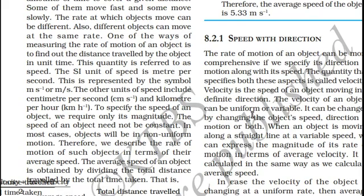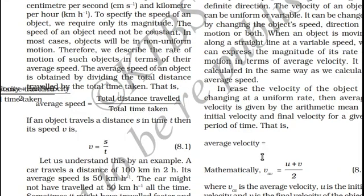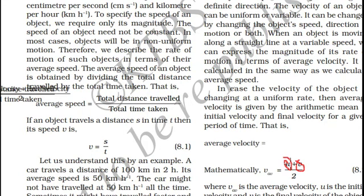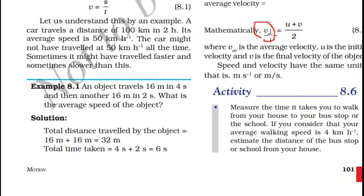Velocity of an object can be uniform or non-uniform — we can also call non-uniform velocity variable. Velocity is calculated the same way as speed, and the unit remains the same. In case the velocity of an object is changing at a uniform rate, the average velocity is given by the arithmetic mean of the initial and final velocity: V_av equals (initial velocity + final velocity) divided by 2.